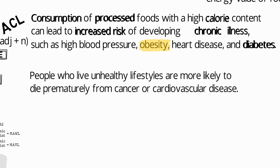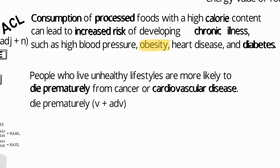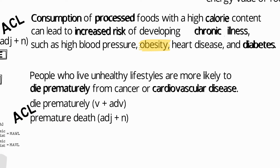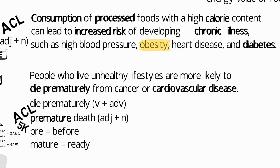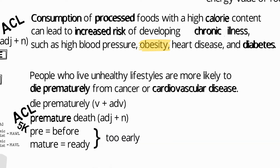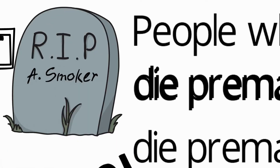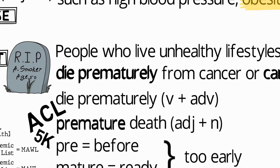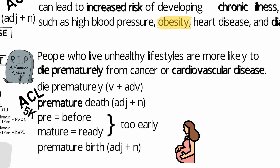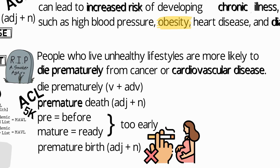Here's another context: 'People who live unhealthy lifestyles are more likely to die prematurely from cancer or cardiovascular disease.' 'Die prematurely' is a verb and adverb collocation, and the related collocation 'premature death' (adjective and noun) is in the Academic Collocation List. The word 'premature' is a mid-frequency item: the prefix 'pre' means before, and the root 'mature' means ready, so premature means too early. Premature death is therefore death at an early age — for example, dying from cancer at 40 or 50. Another collocation is 'premature birth,' relevant if the topic is smoking.